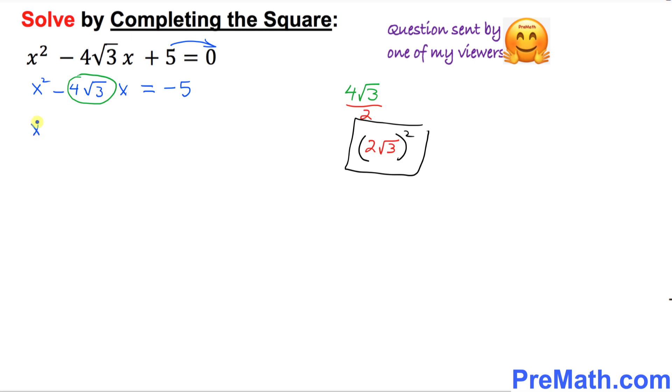So I am going to write x squared minus 4 times square root of 3x plus equals negative 5 plus, and now I am going to add this quantity 2 times square root of 3 squared on this side and 2 times square root of 3 squared on this side as well.